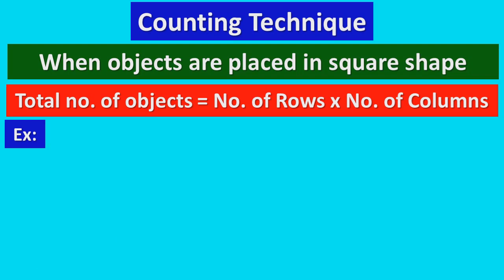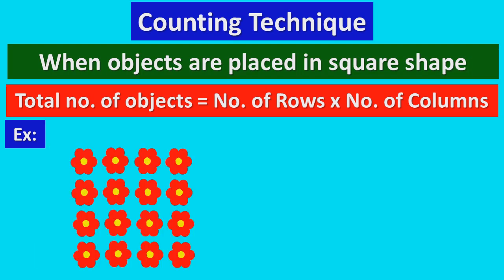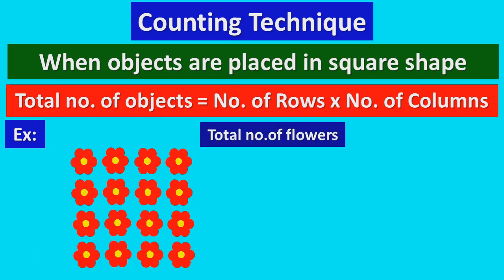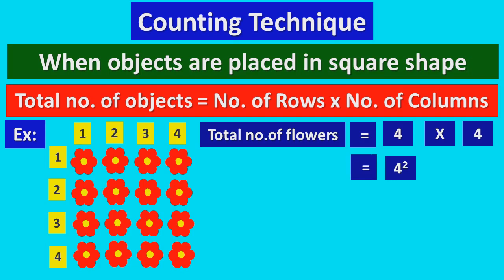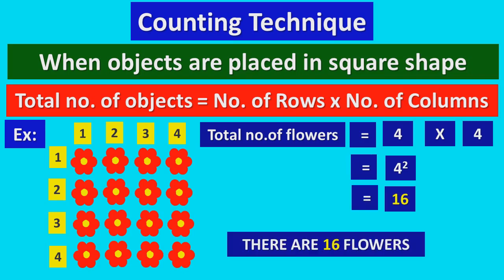Consider another example. Consider the flowers. Total number of flowers: there are 4 rows and 4 columns. So, 4 into 4 is equal to 4 squared, which is equal to 16. So, there are 16 flowers.